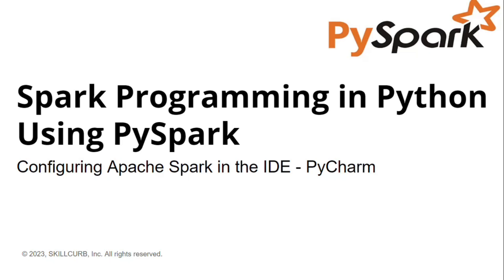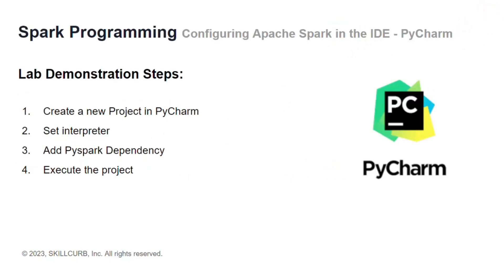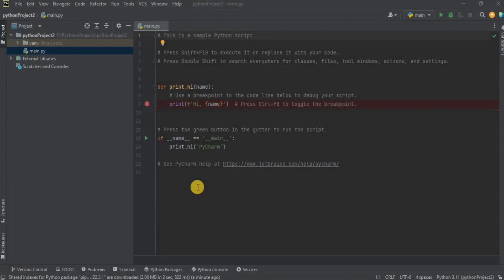Hi, I'm Aliza Tanbir from Skill Curve. In this video you will learn how to configure PyCharm as your Spark development IDE. For that, firstly we are going to create a new project in PyCharm, then we are going to set the interpreter for Python, then we are going to add the Spark dependency, and finally we are going to execute our project.